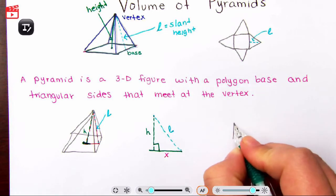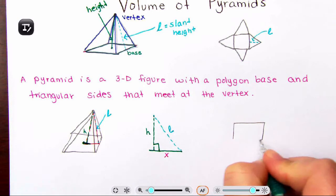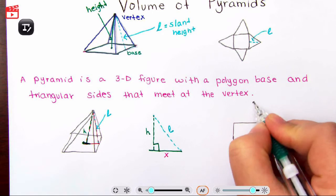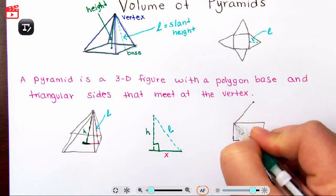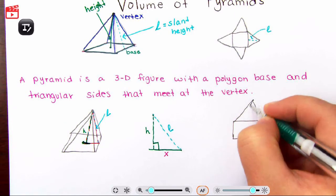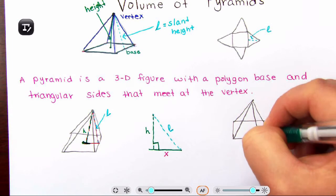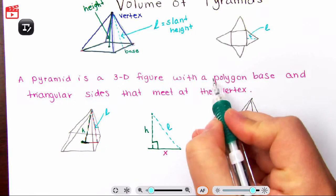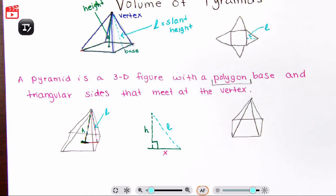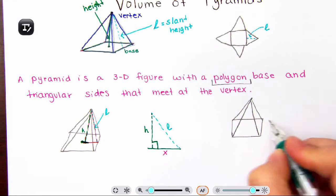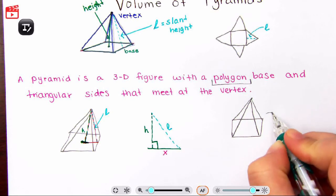We're using a rectangular-based or square pyramid as our example, but you can do this with any other base. Our definition says a polygon base — a polygon just means a many-sided shape — so it doesn't matter what shape the base is; the approach is exactly the same.